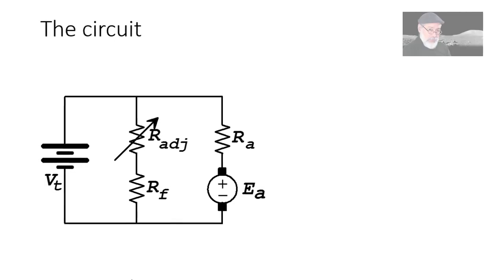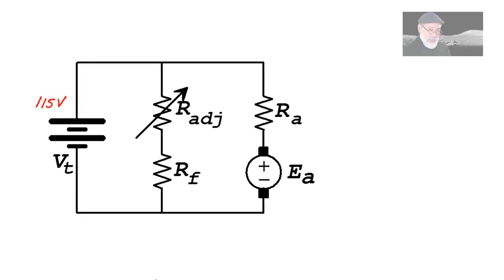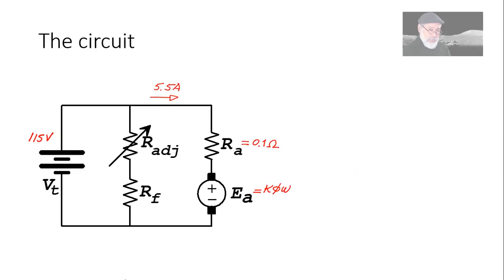The circuit will be that of a shunt motor. What do we know? We know the voltage of the external source, 115 volts DC. We know the current in the armature, 5 and a half amperes. We know the resistance of the armature, 0.1 ohms. And what else? We know that E is K·Φ·ω. That's all? Well, we also know omega because we know the rpms of the machine, 1000. We can convert that to radians per second. Oh, we know a lot of things.